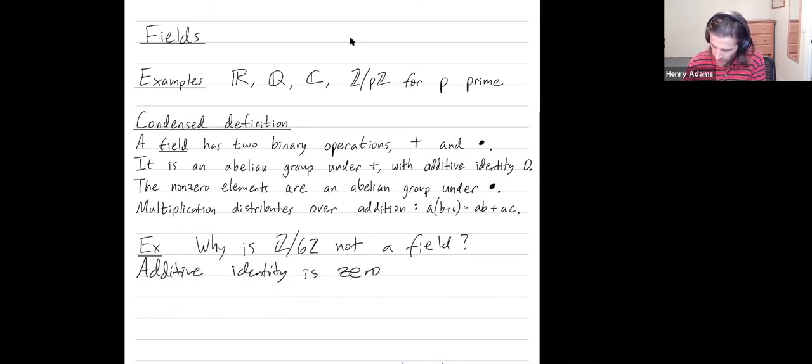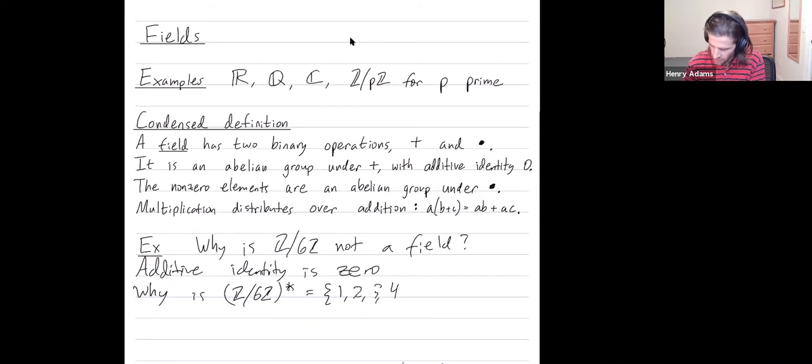Let's remove zero, and ask why is Z mod 6Z with zero removed, which is the numbers 1, 2, 3, 4, and 5, why is this not an abelian group under multiplication?